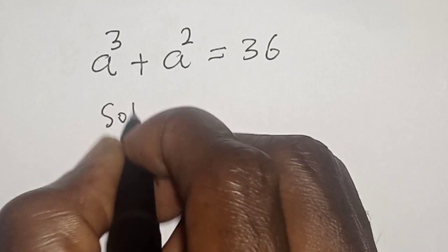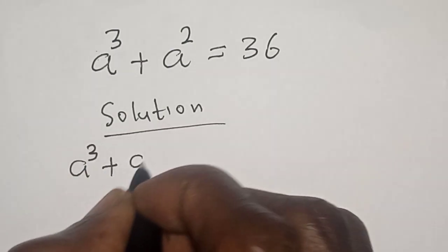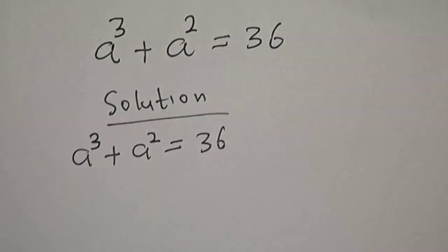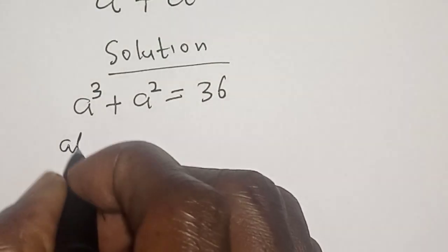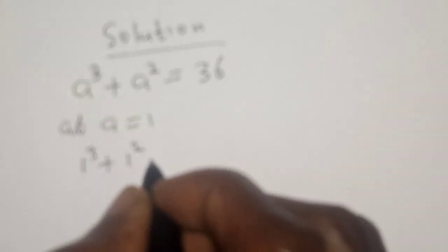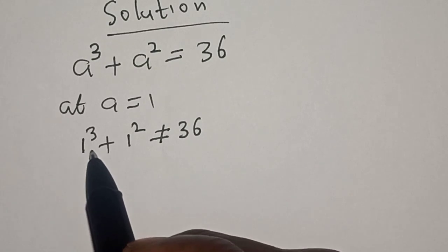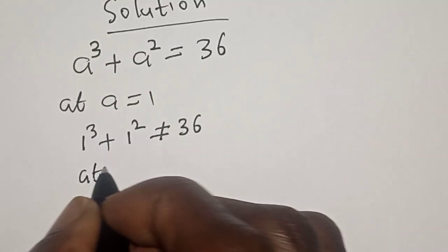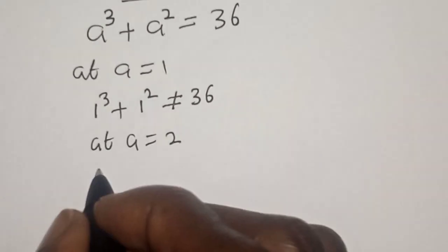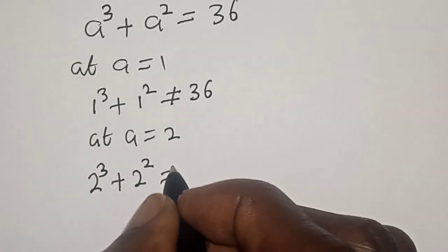We have a solution. The equation is: a raised to power 3 plus a squared is equal to 36. Let's check to find the first root. At a equal to 1, one raised to power 3 plus one squared is not equal to 36. Let's check at a equal to 2: two raised to power 3 plus two squared is also not equal to 36.